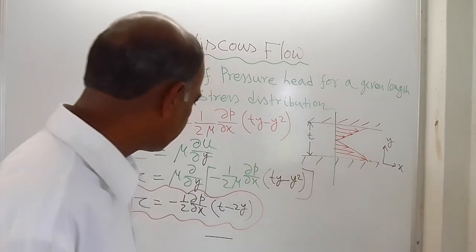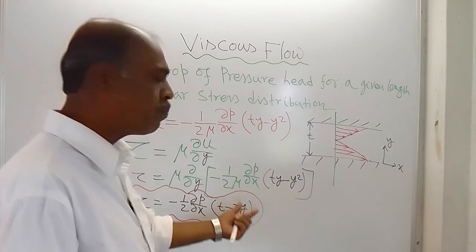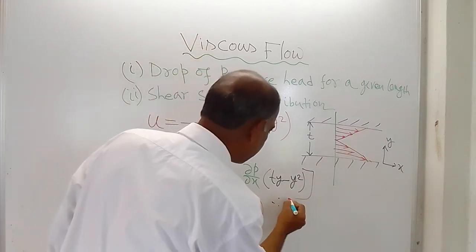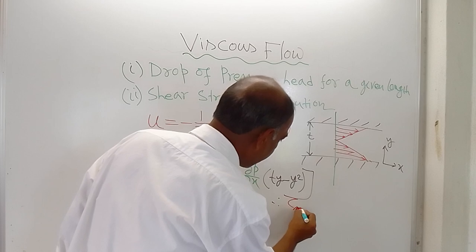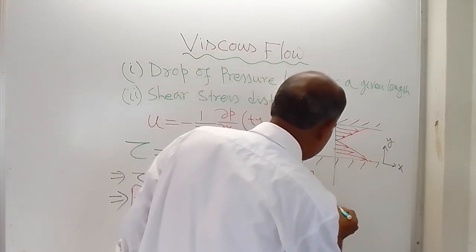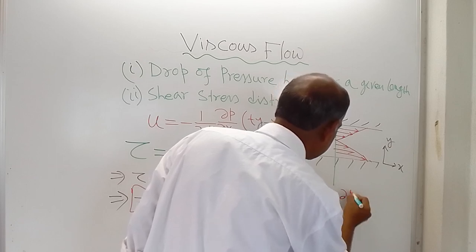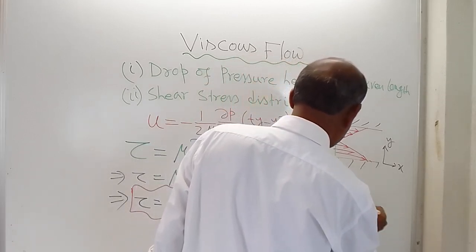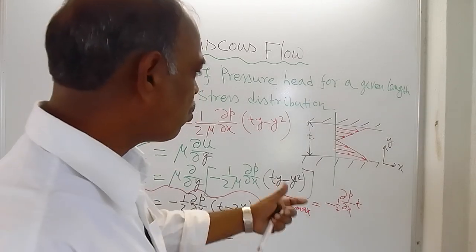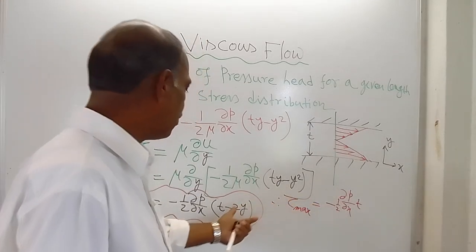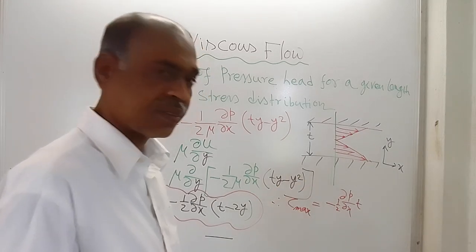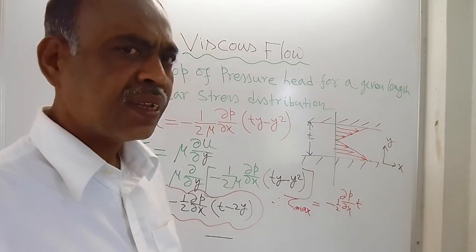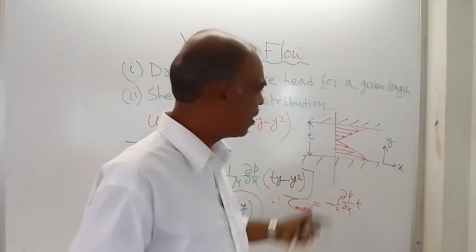This will be the shear stress distribution. You can see that at the midpoint, shear stress is zero, and at the surface of the walls, shear stress is maximum. What is the maximum value? Just by putting y equals zero or y equals t, you will get the maximum value. So we can write tau max equals minus half del p del x times t. If you put y equals zero, you will get this result. If you put y equals t, then you will get a positive result with a positive sign, but the magnitude of the shear stress remains the same.